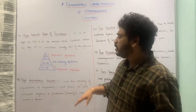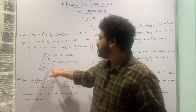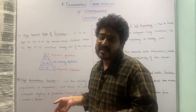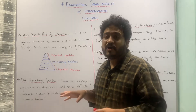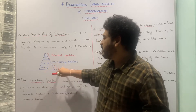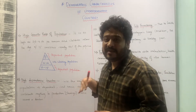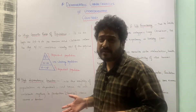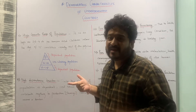Let us now look at high dependency burden. Since the majority of the population is in the 0 to 15 range, they are not actually contributing to the production process. When they are not contributing to production, they are dependent upon those who are. As a result of the high number of these unproductive or dependent populations, the effective rate at which the country should grow is being hindered. For example, if I am earning 10,000 rupees a month but have to feed 10 individuals, I will not be saving anything.